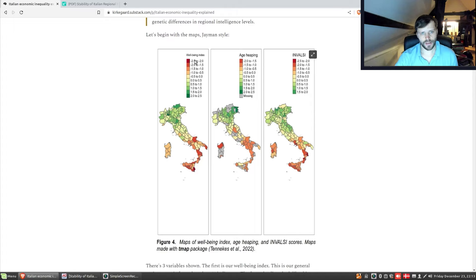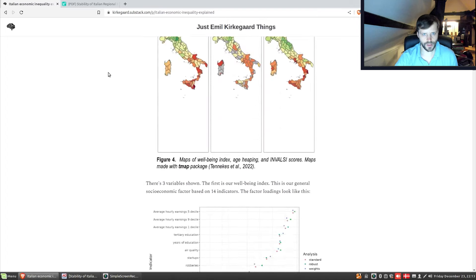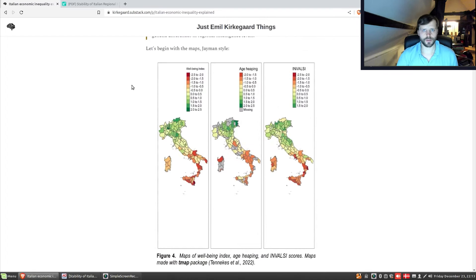The first, the well-being index is a composite of 14 indicators. As we've talked about many times, if you take regional data or individual data and you collect a lot of measures like income and education level and lifespan, you'll find that they tend to correlate positively. So there's a sort of a general factor of socioeconomic outcomes, which by popular demand is now being called the well-being index. Second, INVALSI, is the mandatory scholastic tests in Italy. These data are from the last 10 years or so. You do a factor analysis of these, which gives you an overall best estimate of their current child level cognitive ability.